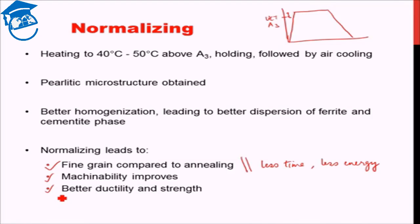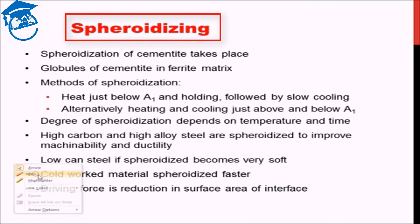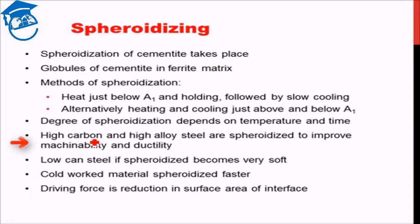Now let us discuss about spheroidizing. Spheroidizing is a process in which the idea is that cementite occurs as very fine and elongated sharp particles, which are regions of stress concentration where fracture and failure can start. If instead of fine sharp-edged cementite we let them form spheres, there will be an absence of fine sharp edges.